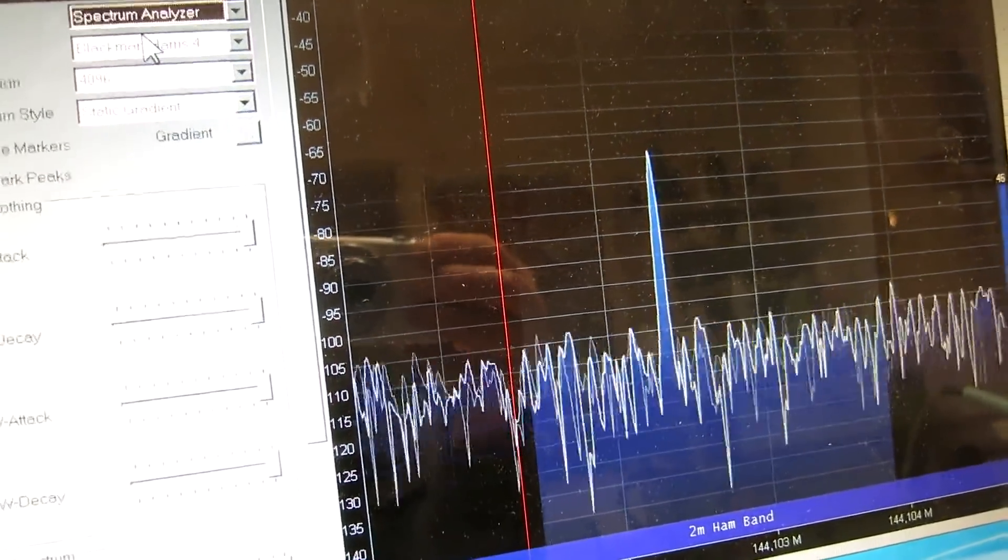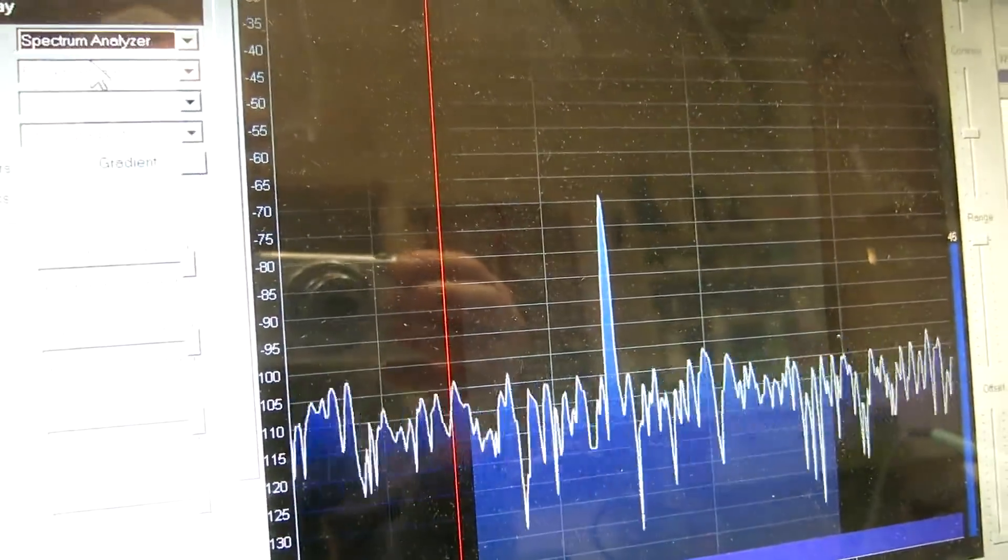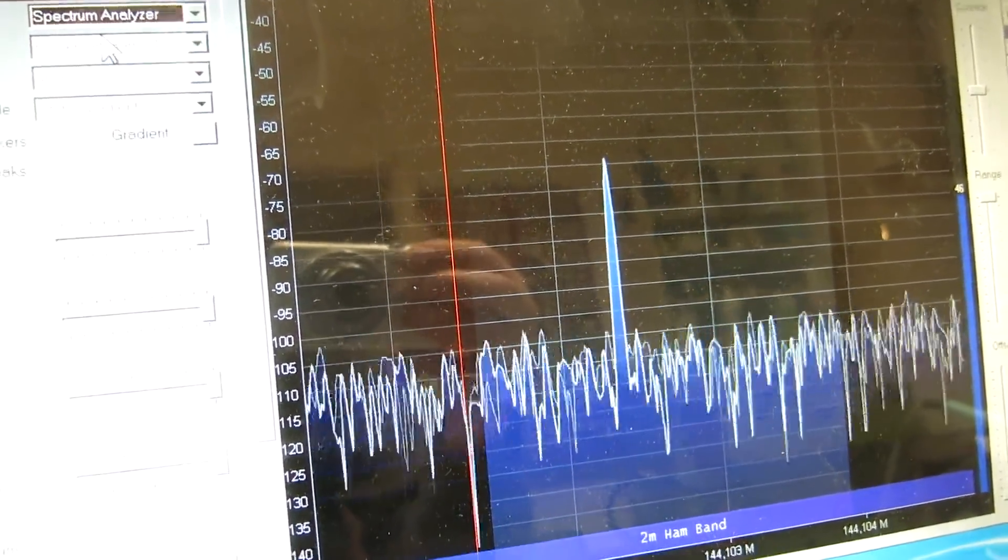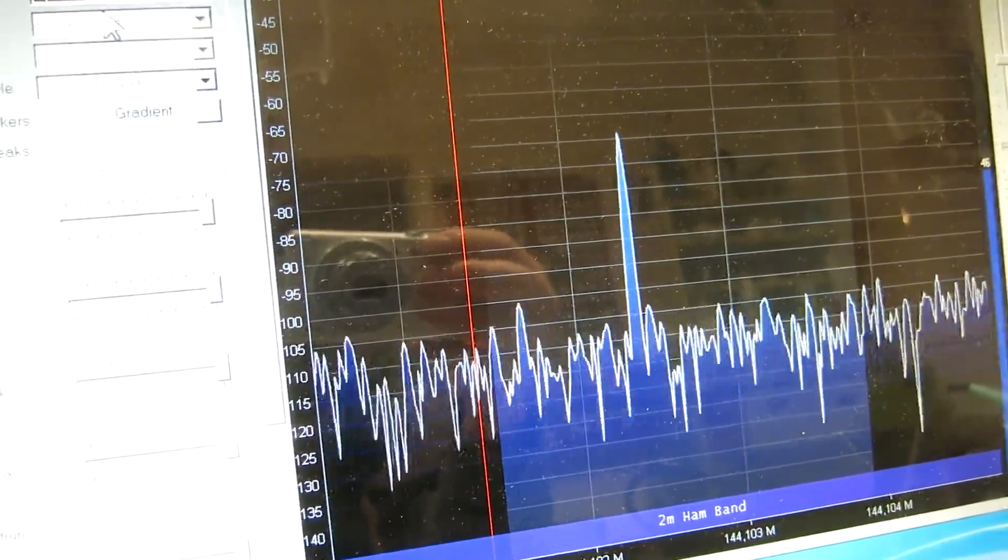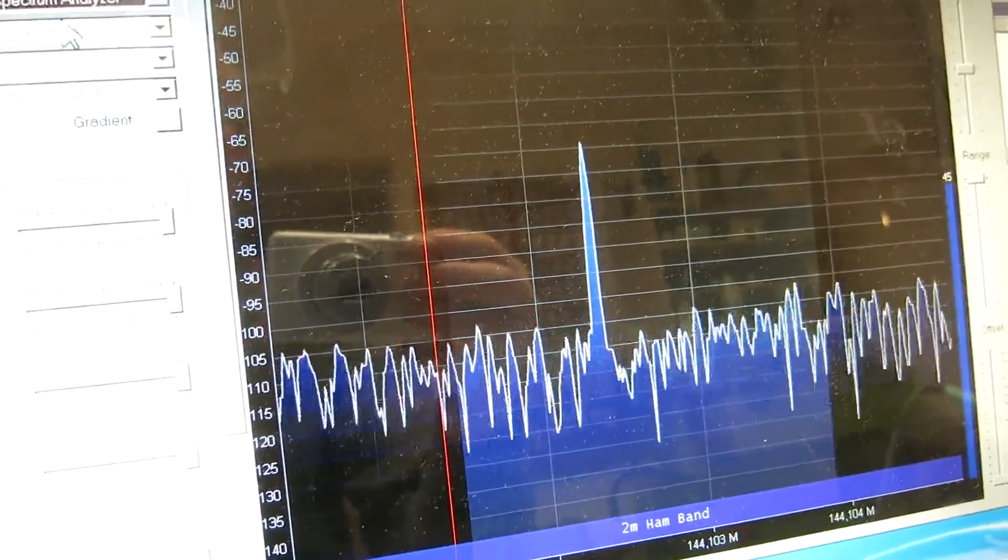But even so, with the HF Plus, if you put a selective filter, a preamplifier, if you want to use it on 2 meters, it's going to be a good advantage. So I now remove the FM band signals again.